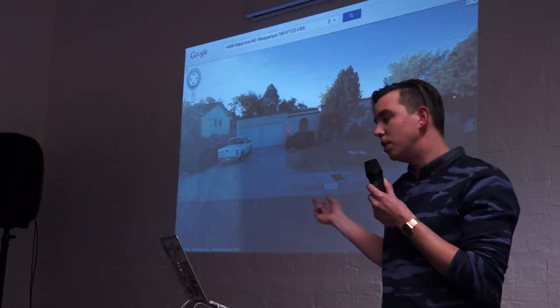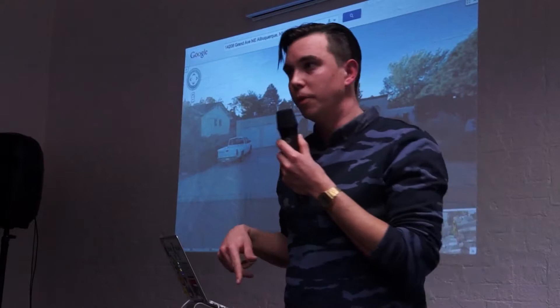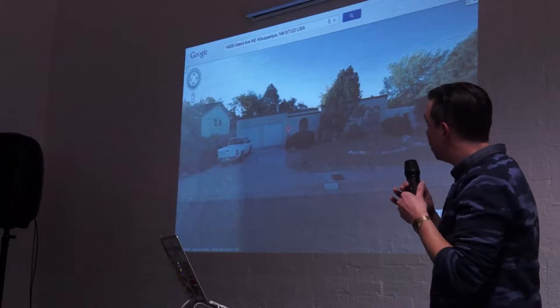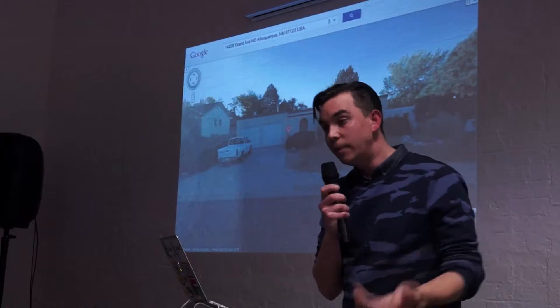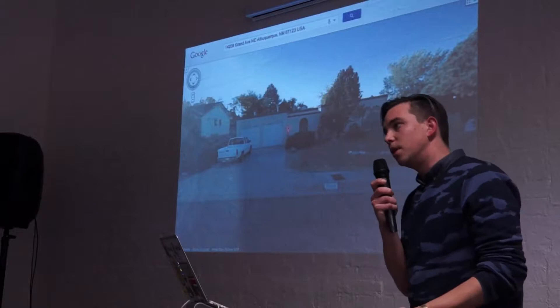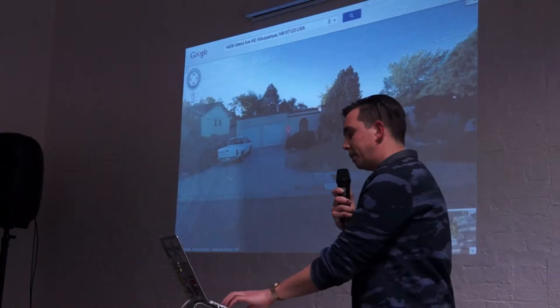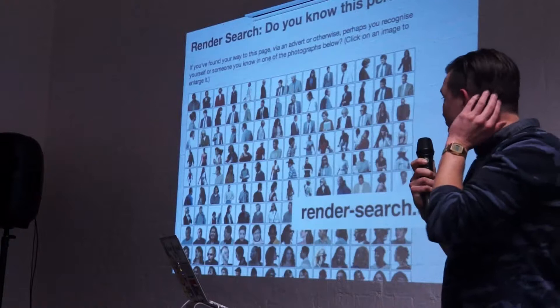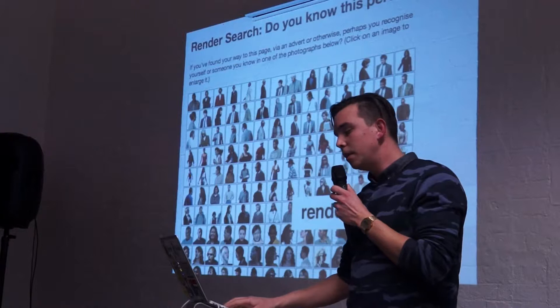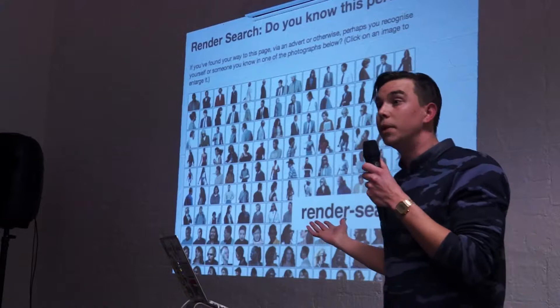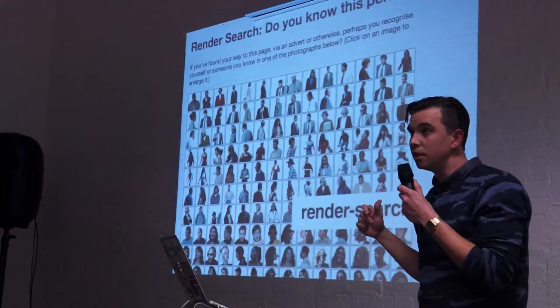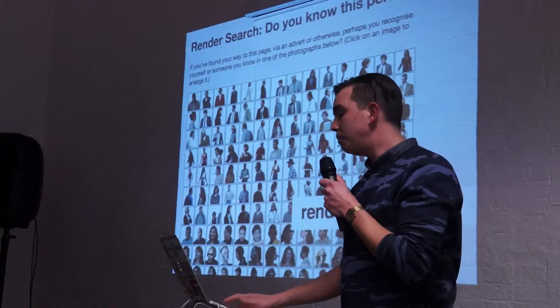The company behind these stock people is called Real World Images, and according to their website their address is on Grand Avenue in northeastern Albuquerque, New Mexico — a residential address. I emailed the company several times asking about the source of these images and they never replied. I phoned them numerous times; the one time I got through, as soon as I asked, 'So tell me about the people,' they hung up and stopped. They refused to talk about it. So I started looking for the people directly. I figured if the company was based in Albuquerque, maybe these people were just snapped on the street in the late nineties.